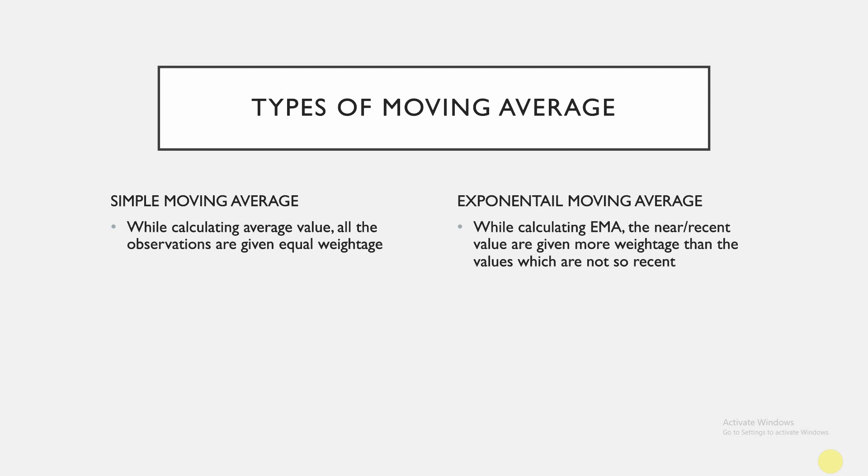For example, if today's date is 10th April and you're calculating a 10-day moving average, you take closing values from 1st April to 10th April. In EMA, the value of 9th April will be given more weightage than 1st April. But in SMA, each and every value from 1st to 10th April is given equal weightage.